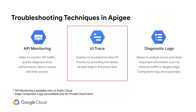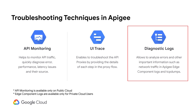UI Trace is another powerful utility. It allows you to trace live incoming API requests and capture details about each step during the API proxy flow, helping you troubleshoot and monitor live API requests running through APG Edge. In addition, APG Edge has diagnostic logs for each of its components which can be used to perform deeper investigation about various issues or errors. Remember, API monitoring is available only for public cloud users and the APG Edge component diagnostic logs are accessible only for private cloud users.